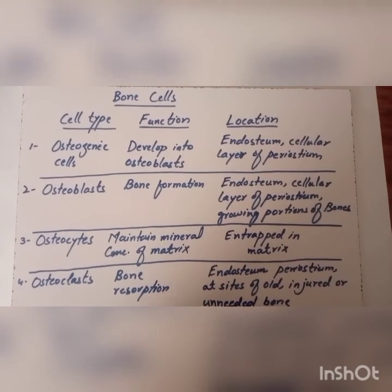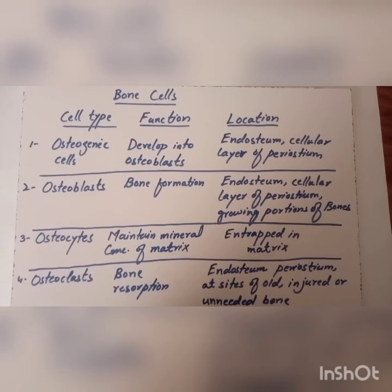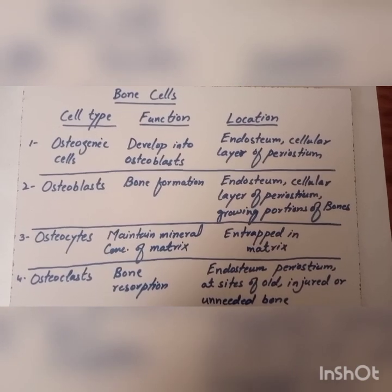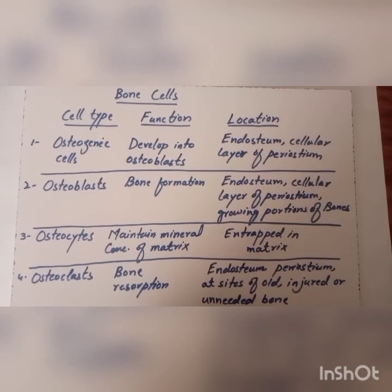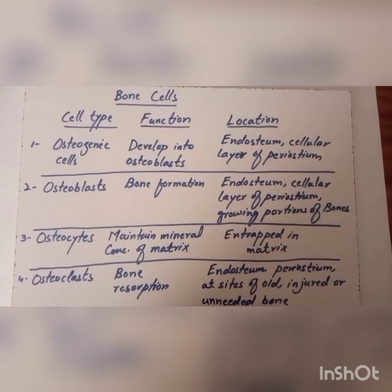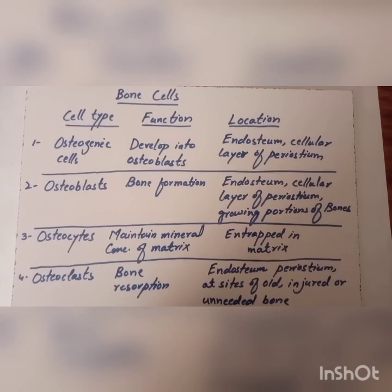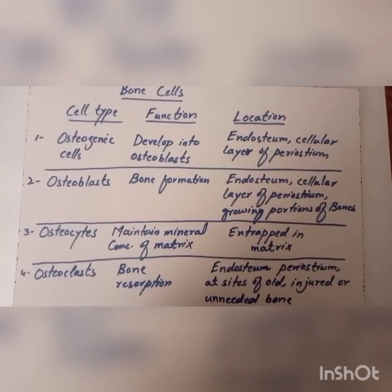Fourth one is osteoclasts. Their function is bone resorption. They are located in the endosteum, cellular layer of periosteum, and at the sites of old, injured or unneeded bone.